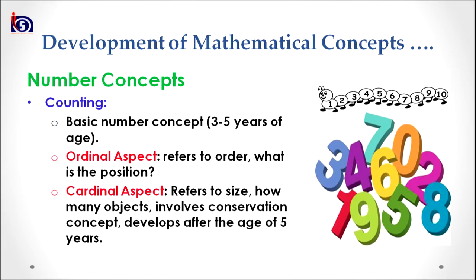As the child gains maturity and comes around 5 years of age, meaningful counting also starts. There are two aspects under counting. The first is the ordinal aspect, which refers to order — it answers the question: what is the position of a particular thing in the whole scheme? The second aspect of counting is the cardinal aspect, which refers to size — it answers the question: how many objects are there? The cardinal aspect also involves the conservation concept and develops after the age of 5 years, as it is a more complex aspect of counting.